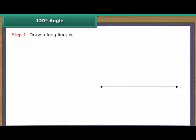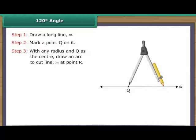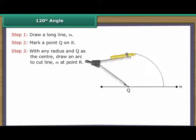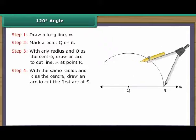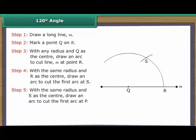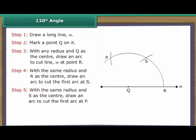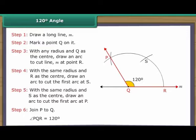Construction of 120 degree angle. Draw a long line M and mark a point Q on it. With any radius and Q as the centre, draw an arc to cut line M at point R. With the same radius and R as the centre, draw an arc to cut the first arc at S. With the same radius and S as the centre, draw an arc to cut the first arc at P. Join P to Q. Angle PQR is formed and equals 120 degrees.